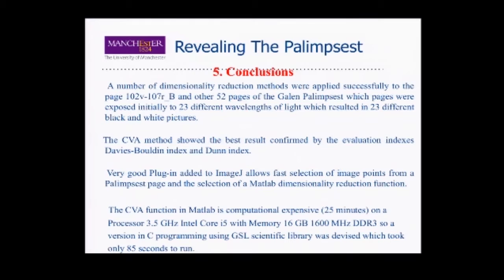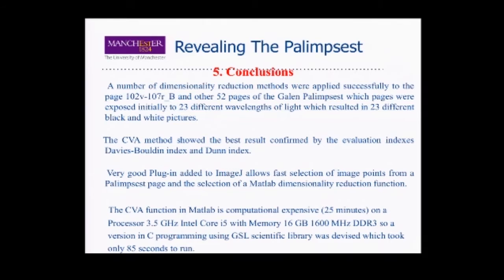Conclusions: The dimensionality reduction methods were applied successfully to page 102v/107 and another 52 pages of the Galen Palimpsest. The CVA method showed the best result, confirmed by the evaluation indexes Davies-Bouldin and Dunn index. The ImageJ plugin allows fast selection of image points from a palimpsest page and selection of a MATLAB dimensionality reduction function. The CVA function in MATLAB is computationally expensive, so I programmed a C version using the GNU scientific library, which takes only 80 seconds. Thank you.